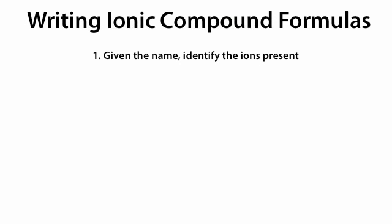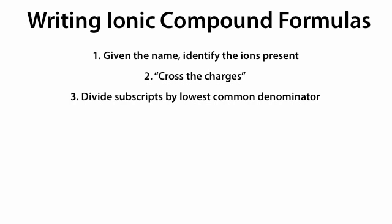Next we're going to talk about writing ionic compound formulas. If we're given the name of an ionic compound, we first identify the ions present. Step two, we cross the charges — we'll see what that means in a moment. And step three, divide the subscripts by the lowest common denominator.